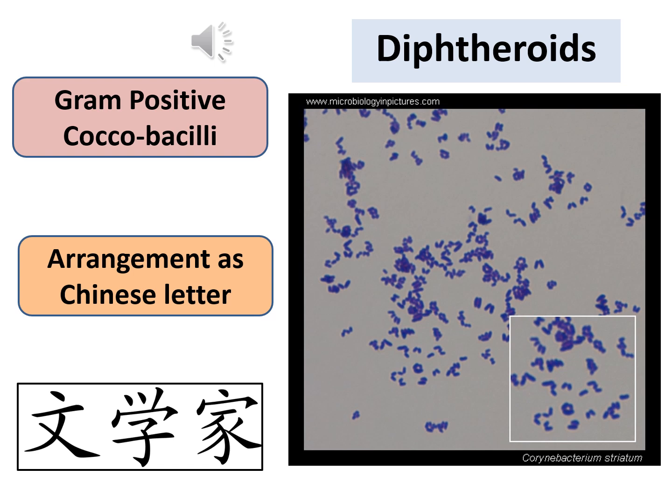Diphtheroids are defined as aerobic, non-sporulating, pleomorphic gram-positive bacilli that are more uniformly stained than Corynebacterium diphtheriae. They lack metachromatic granules and are arranged in a Chinese-letter pattern. They are usually common commensals of the skin and mucous membranes.